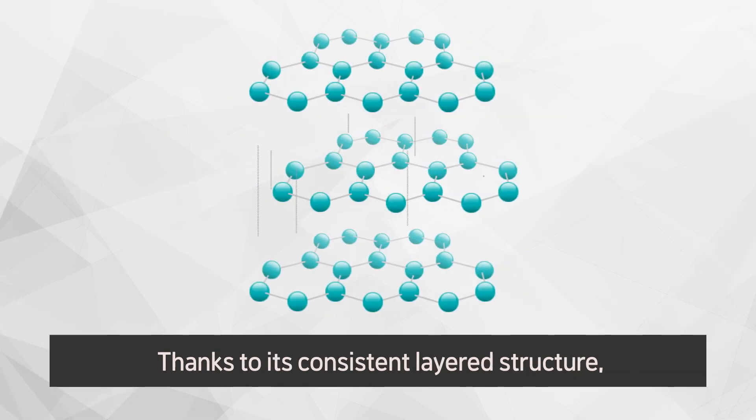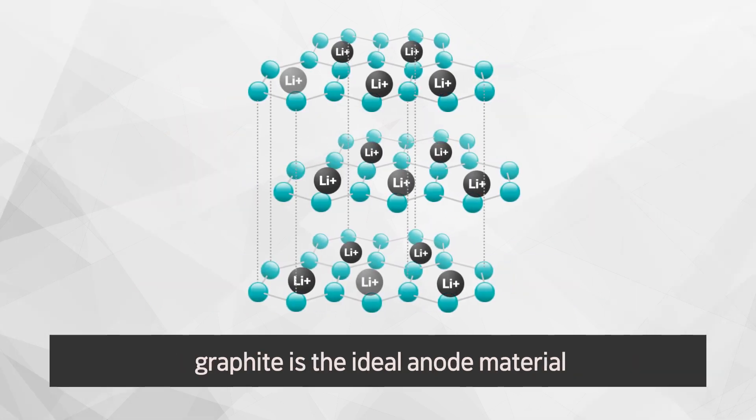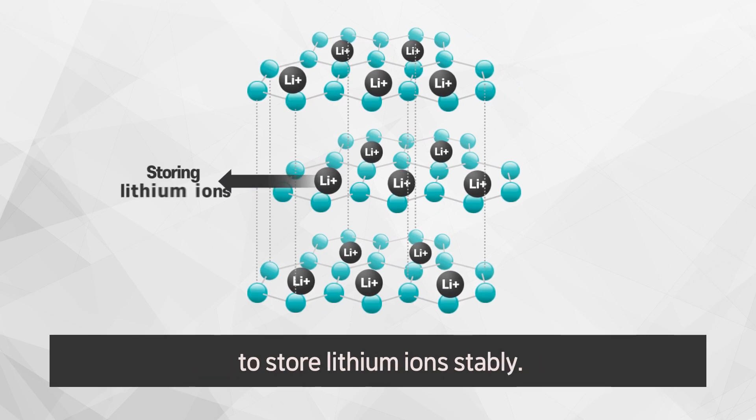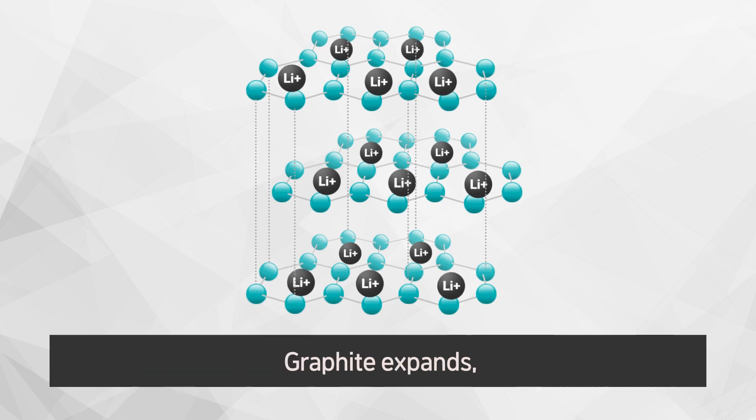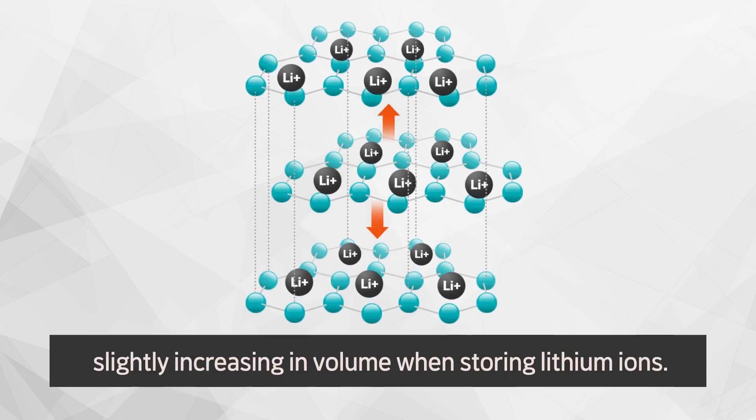Thanks to its consistent layered structure, graphite is the ideal anode material to store lithium-ion stably. However, there was one area for improvement. Graphite expands, slightly increasing in volume when storing lithium ions.